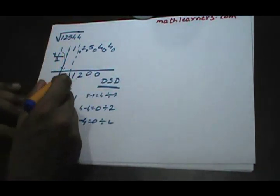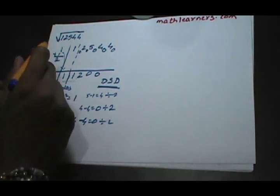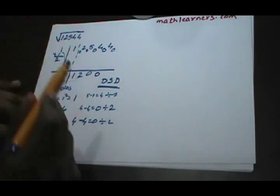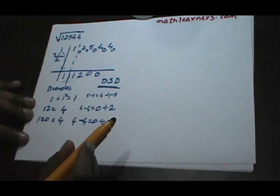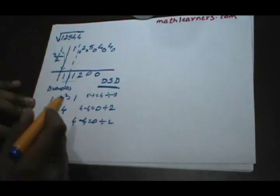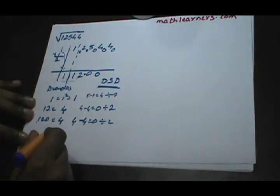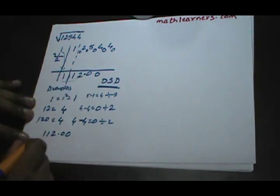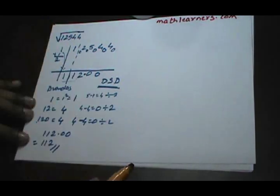So this is our answer. We need to put a decimal point. If we have an odd number of digits in the square, the square root will have (n+1)/2 digits. As we have 5 digits, the square root will have 3 digits, so the decimal comes after 3 digits. The answer is 11200, or simply 112. We can say 12544 is a perfect square.